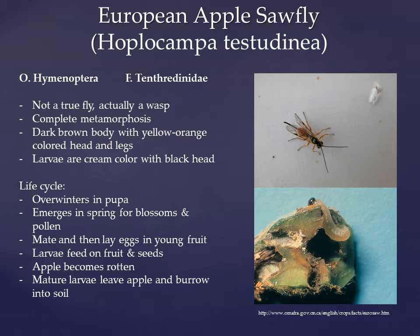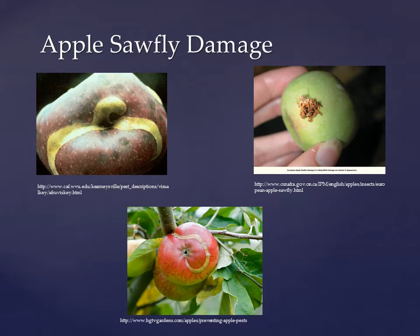The mature larvae then enter the soil to overwinter. The European apple sawfly larvae are responsible for causing the most damage. The larvae tunneling through the fruit causes visible scars on the outside of the fruit and enough damage on the inside to cause the apples to drop prematurely. Their large exit hole that they fill with frass also lowers the aesthetic value of the fruit. As you can see in these pictures, it was clear that the larvae were tunneling, and the top right picture shows their exit hole filled with frass.